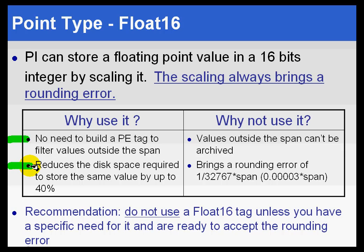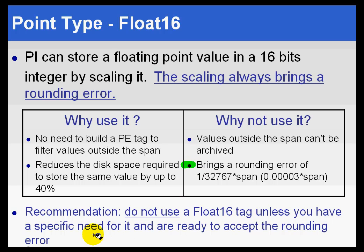Float 16 has built-in clamping on the zero and span of a tag so that values cannot go below zero or above zero plus the span — Float 16 will do that automatically. You wouldn't have to build a separate PI tag to make that clamping. It also reduces disk space required. However, the same thing you might call a feature is also a liability: it cannot archive anything beyond the span. So if you have a level that goes from zero to 100%, it may sometimes go up to 101% due to calibration problems, but this will stay clamped at 100%. It also introduces a rounding error. Unless you have a specific need, we suggest you avoid the Float 16s.